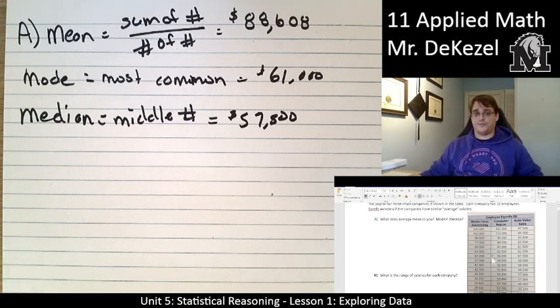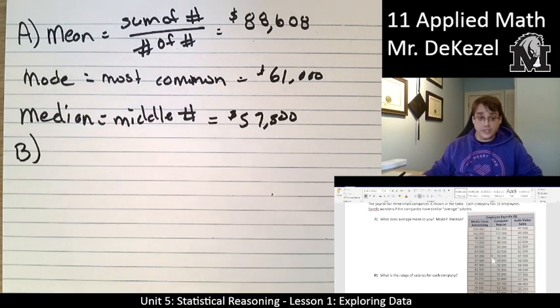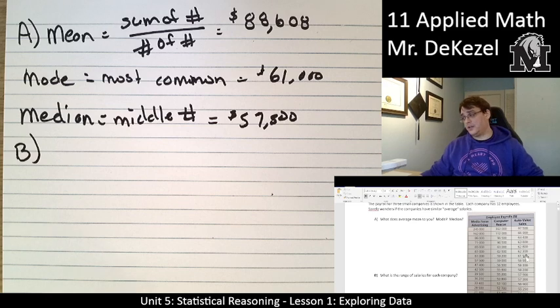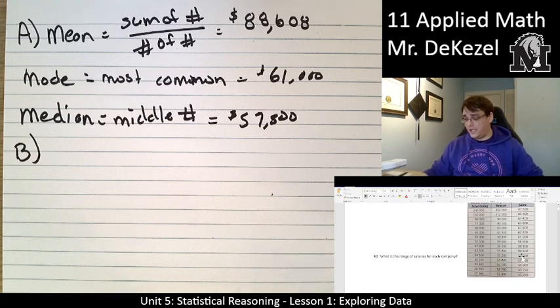So the average, when we talk about it, can be misleading in some ways, but I encourage you to find the mean, median, and mode of those different companies as well. Let's move on to B. We'll talk about another way we can look at this data, which is the range.